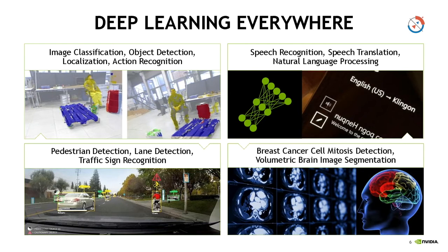Autonomous vehicles are another major application. Pedestrian detection and lane detection — we hear a lot of exciting things about cars becoming more autonomous. How do autonomous vehicles drive themselves? How do they know when they are inside the lane, when to change lanes, how to merge with traffic, how to recognize a red light, traffic signs, speed limits, or even a gesture from a traffic policeman? All these things are possible using deep learning.